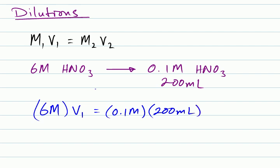So, how do we find the initial volume that we should start with, that we should add to water? Well, that's V1, and just do some simple algebra. Divide both sides by 6 molar, so that we can get V1 by itself.